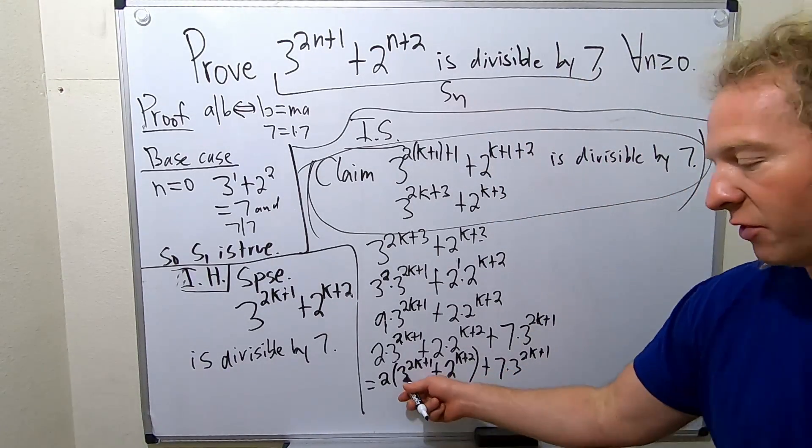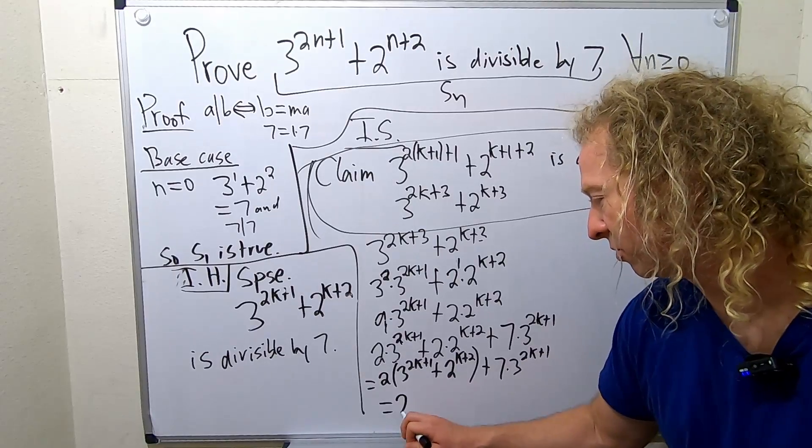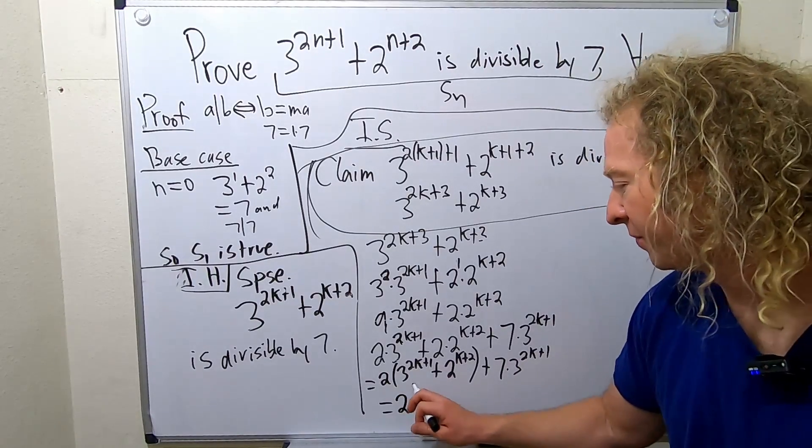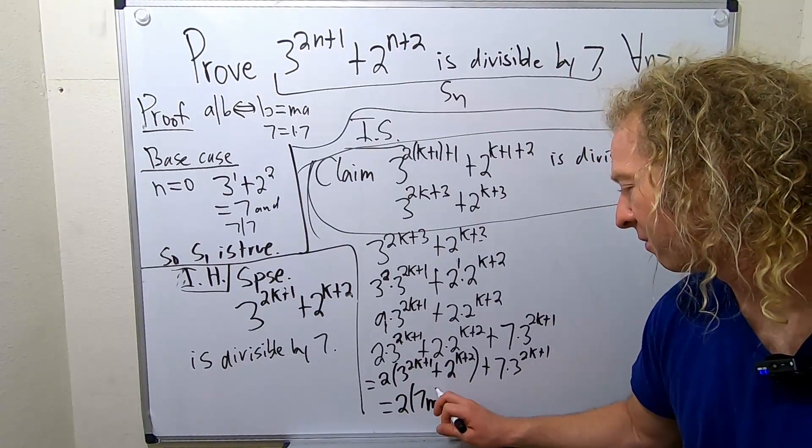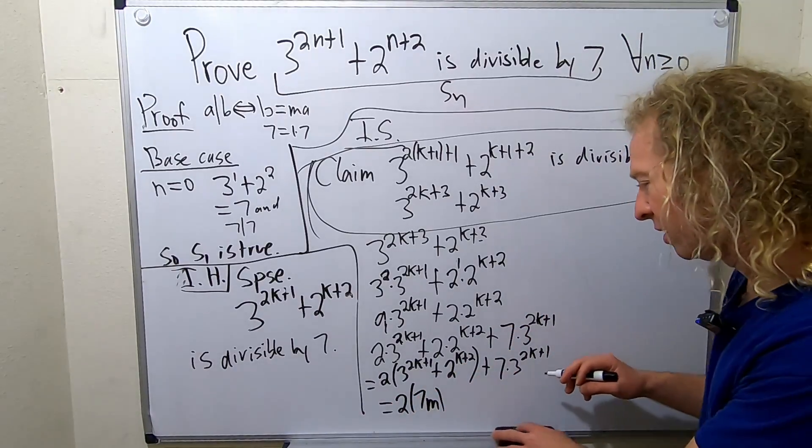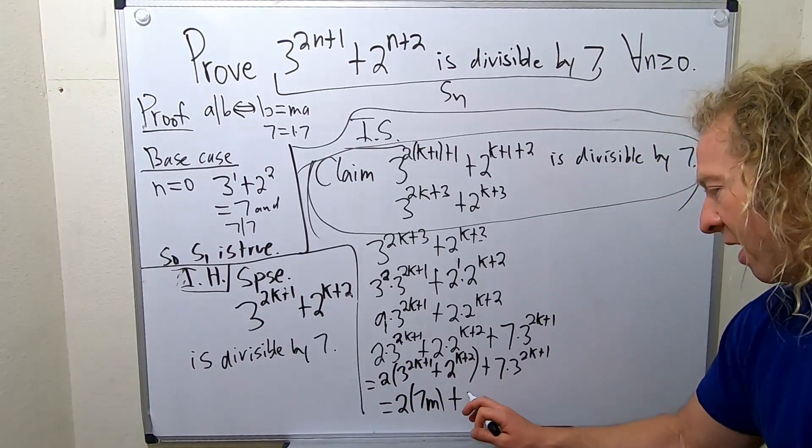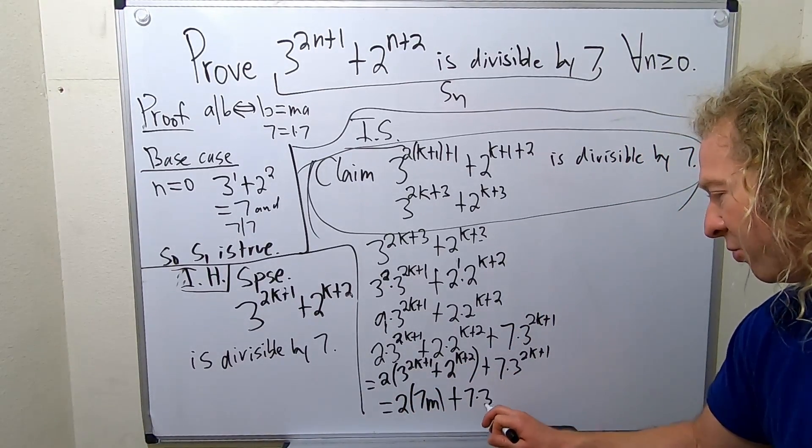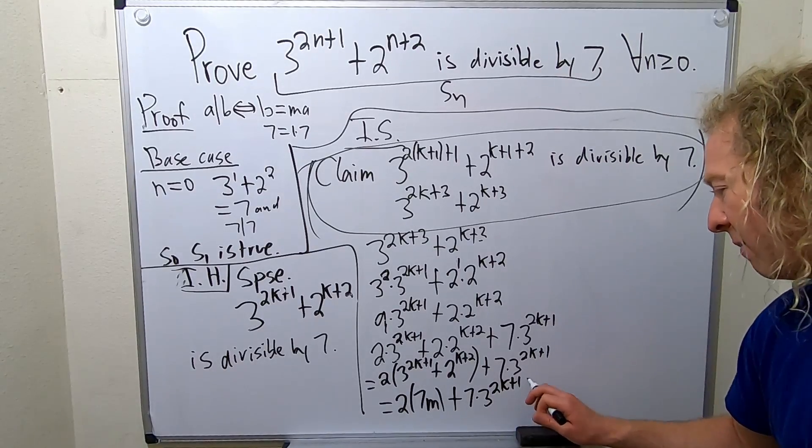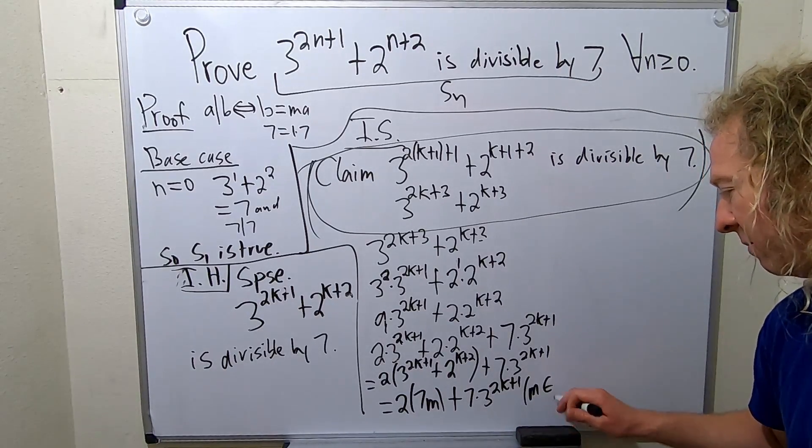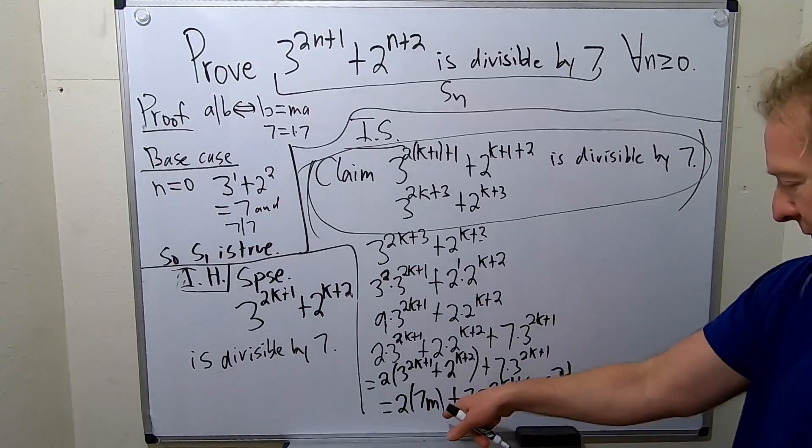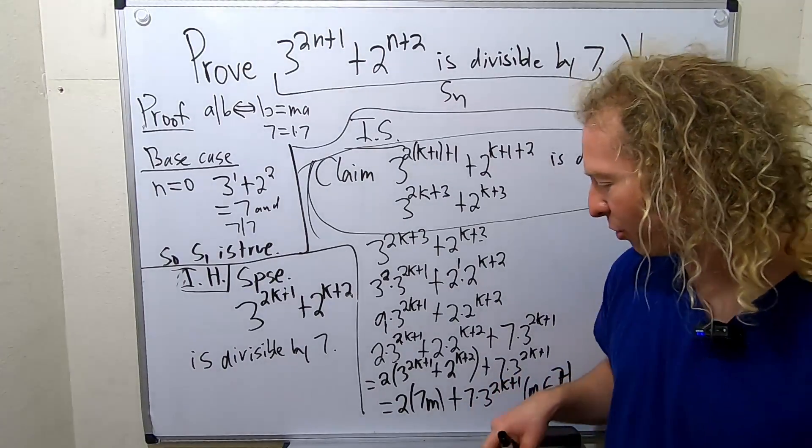Well, now, you know this is divisible by 7, so this is equal to 2 times 7 times an integer. So like, I'll just say 7m, m is some integer, plus 7, times 3 to the 2k plus 1. Where m here is some integer. So m is an element in the set of integers. You can say for some integer m if you like. I'm just running out of room.